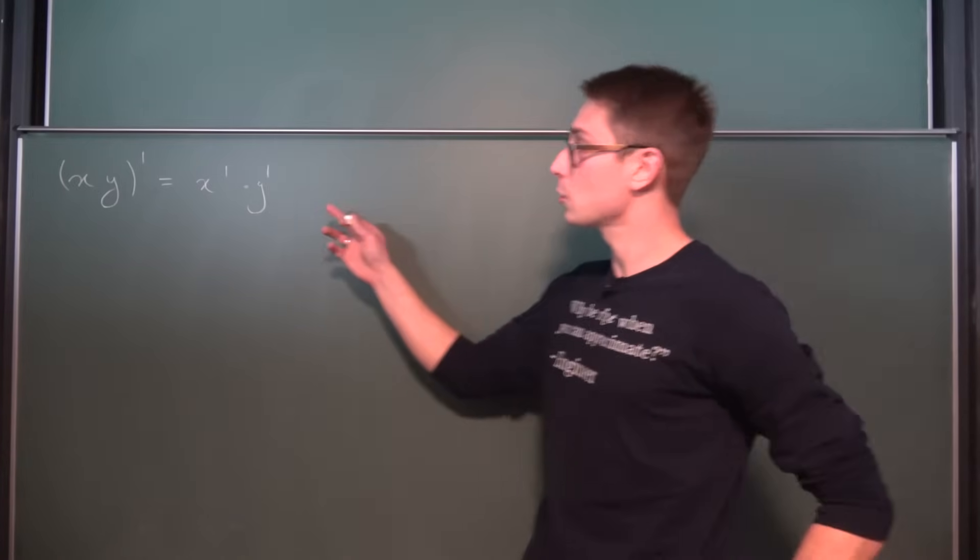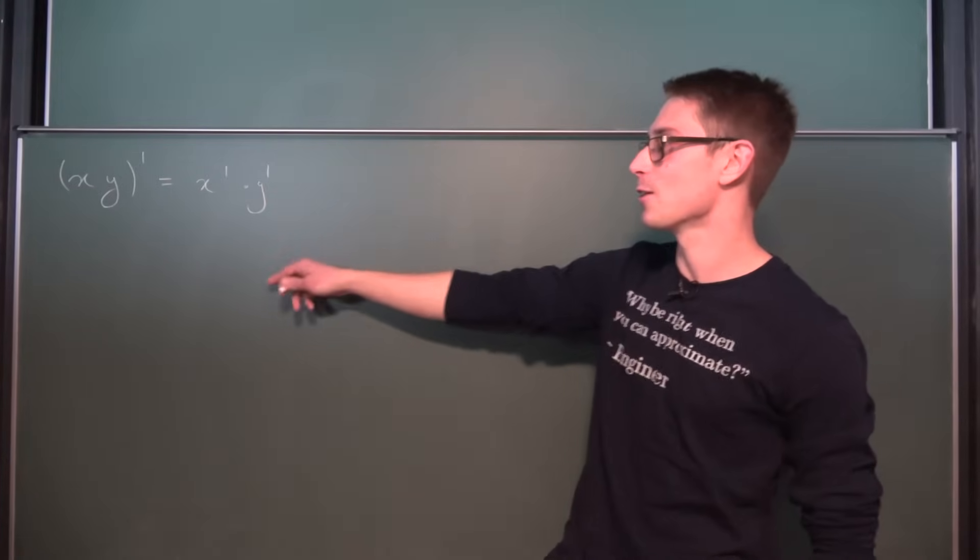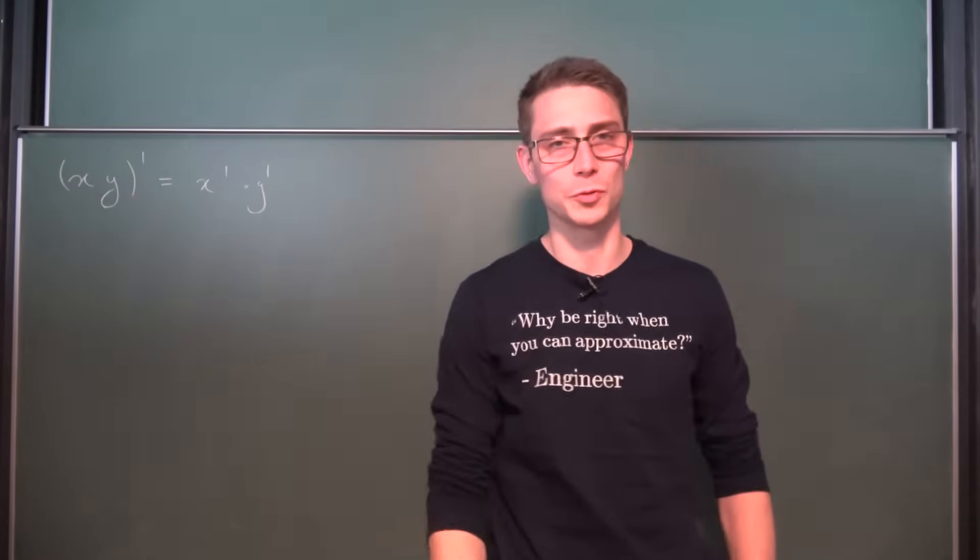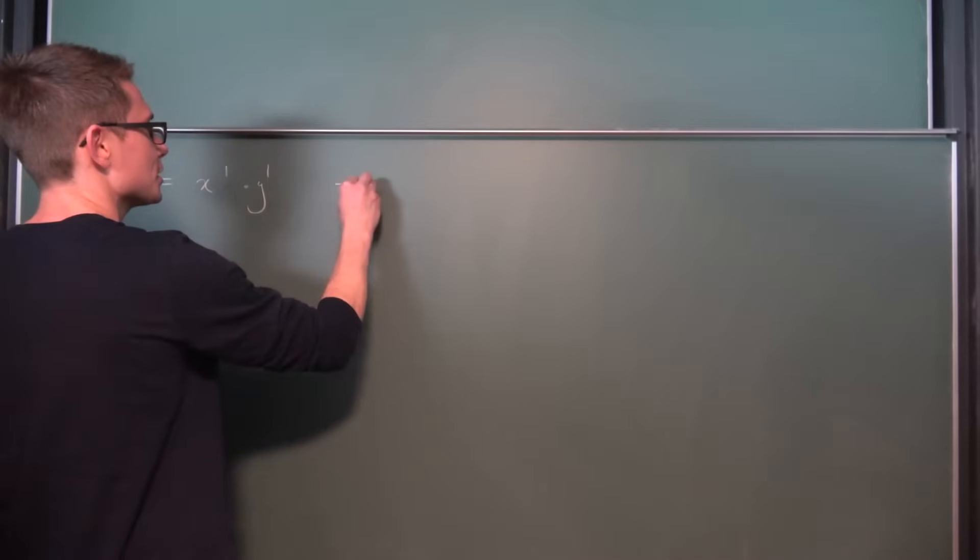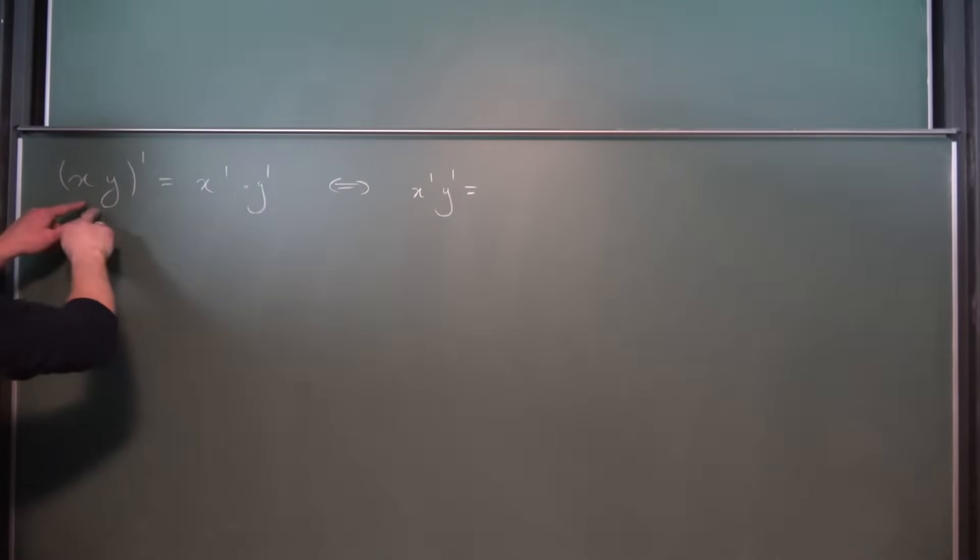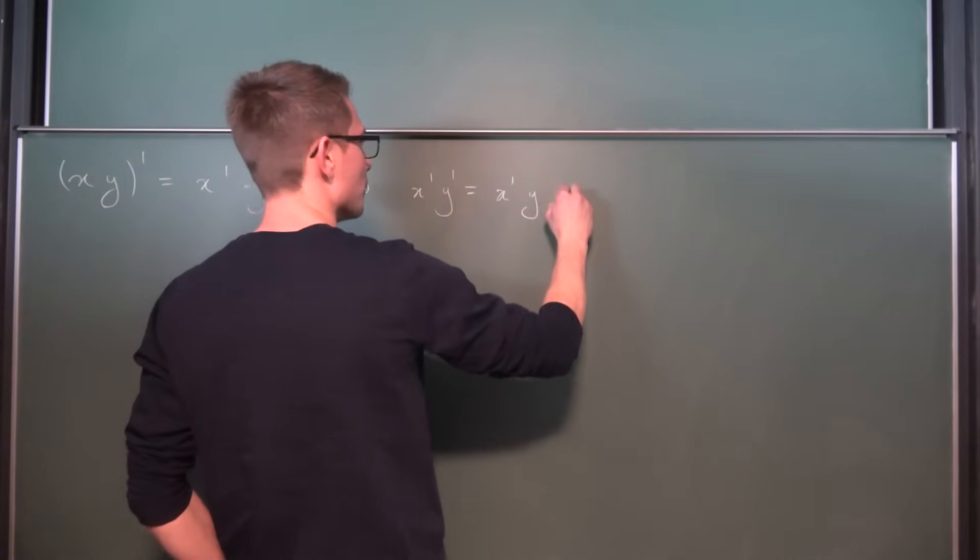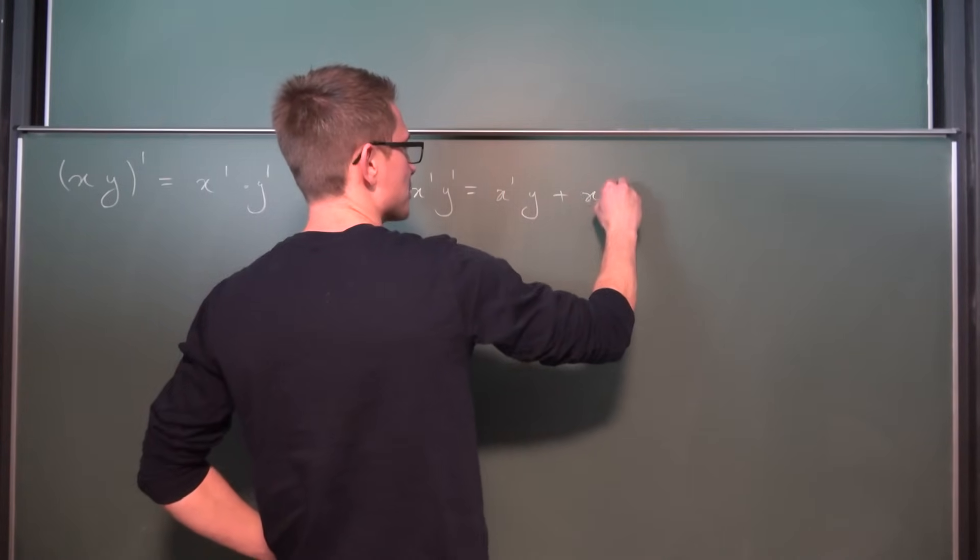So at first we are not gonna use the freshman's dream of product rule for differentiation. Obviously we're gonna use the real product rule on the left-hand side, turning this problem right here into x prime times y prime is equal to, using the product rule, we get x prime times y plus x times y prime.